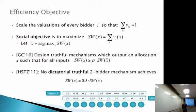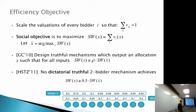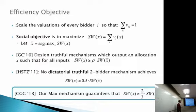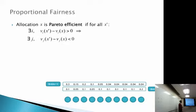We want something better than half, but it was an open question whether anything non-dictatorial could work. In many cases, dictatorial mechanisms seem to be the only option when strategy-proofness is required. However, our first result proposes a mechanism that guarantees two-thirds, breaking the half barrier while not being dictatorial. This is for two bidders and I will generalize it later.